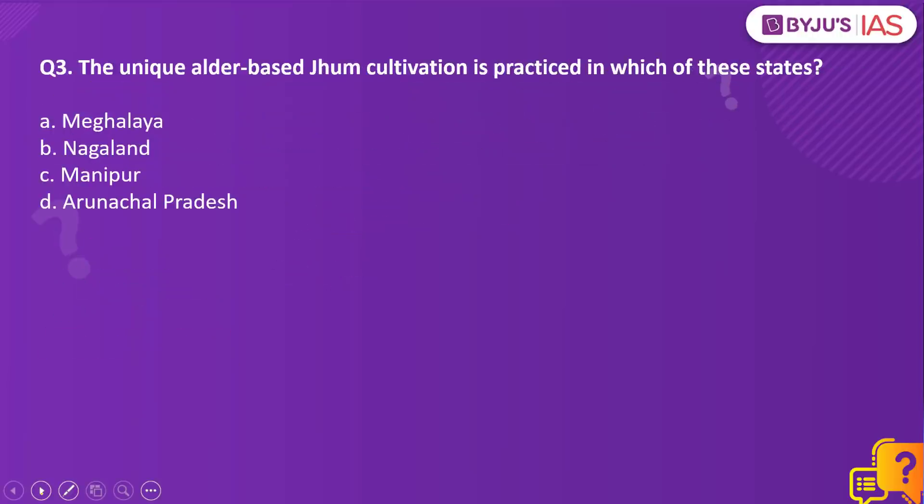Moving on to question number three. The unique alder-based Jhum cultivation is practiced in which of these states? Option A: Meghalaya. Option B: Nagaland. Option C: Manipur. Or option D: Arunachal Pradesh.